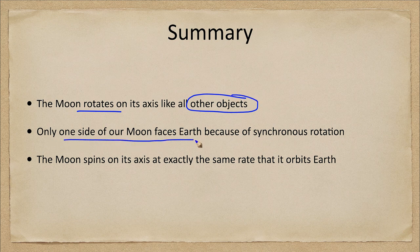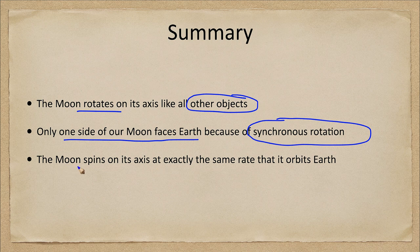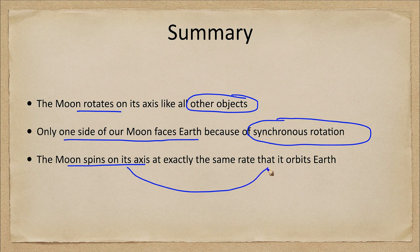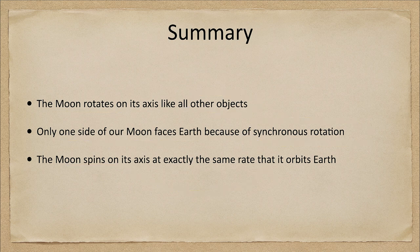Only one side of our moon faces Earth because of synchronous rotation. The rotation and revolution are exactly the same, and that is what is happening here. The moon spins on its axis at exactly the same rate at which it orbits Earth, and that is what causes us to only see one face of the moon from Earth.